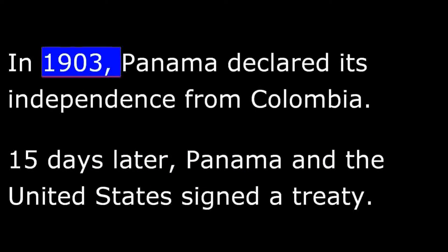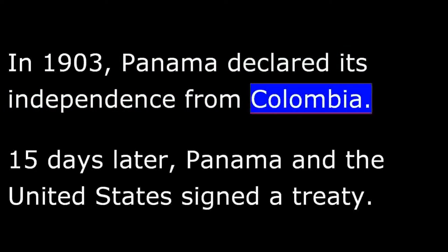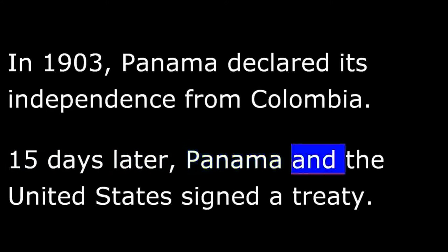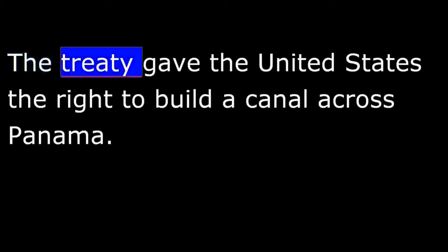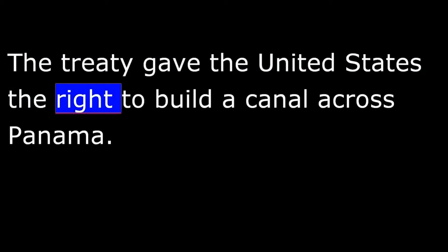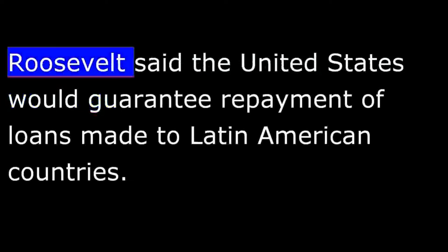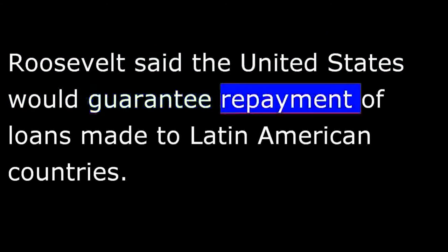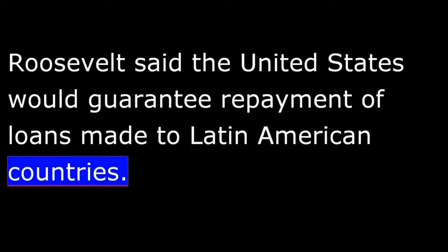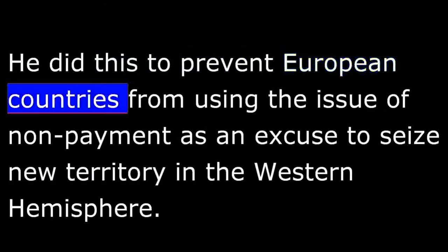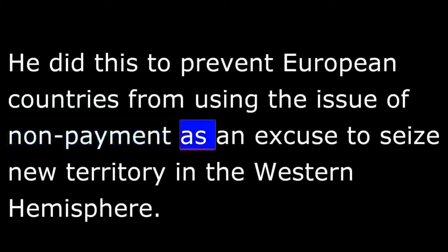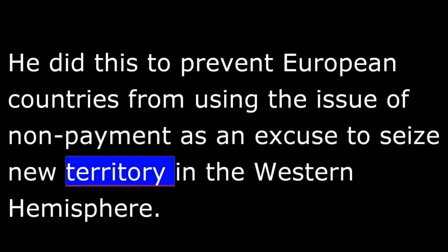In 1903, Panama declared its independence from Colombia. Fifteen days later, Panama and the United States signed a treaty. The treaty gave the United States the right to build a canal across Panama. To protect the canal, President Roosevelt declared greater responsibility for a wide area around the canal. The greatest responsibility was financial. Roosevelt said the United States would guarantee repayment of loans made to Latin American countries. He did this to prevent European countries from using the issue of non-payment as an excuse to seize new territory in the Western Hemisphere.